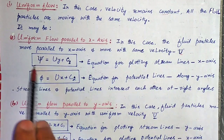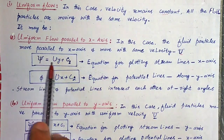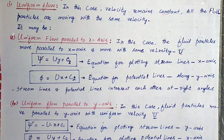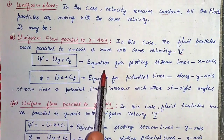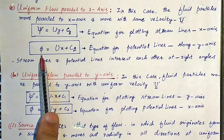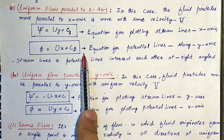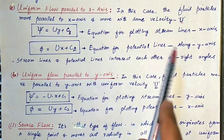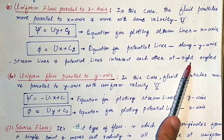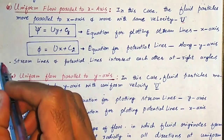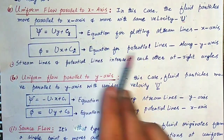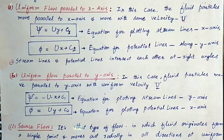If we have a stream function, it will be equal to U into y plus C1. This is the equation for plotting streamlines along the x-axis. And phi is equal to U into x plus C2 — this is the equation for plotting potential lines. Streamlines and potential lines intersect each other at right angles. This is an important point from the examination point of view.